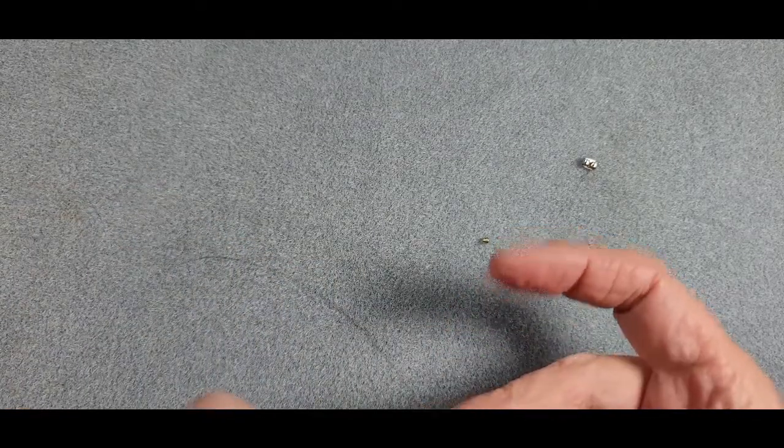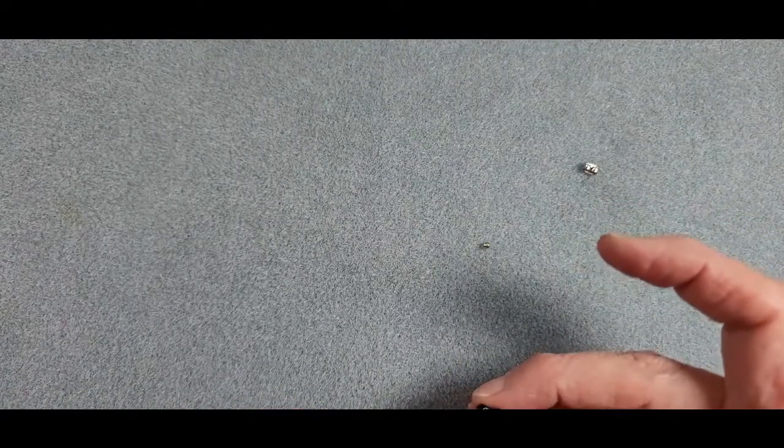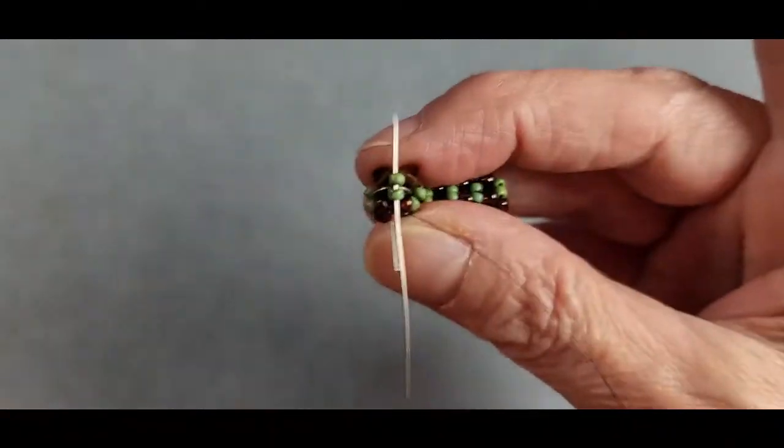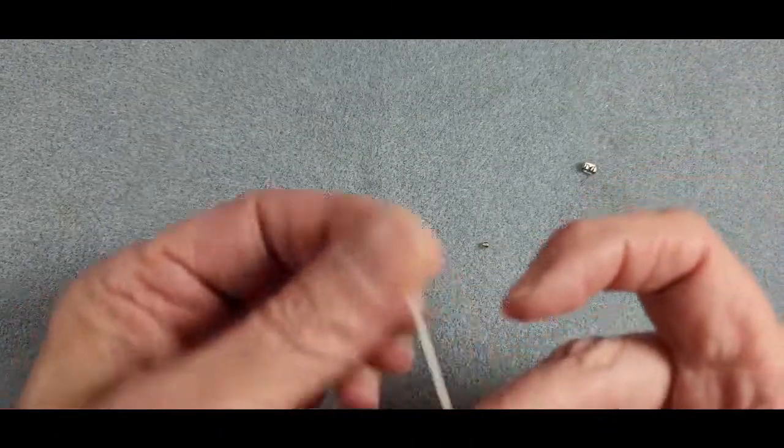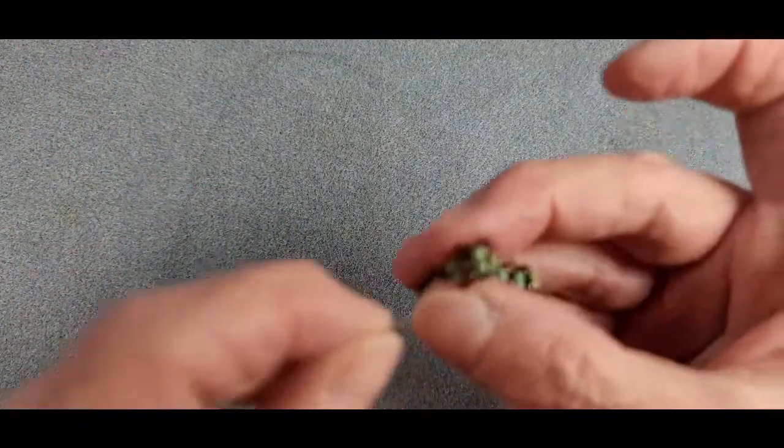So here I am coming around to this 8-0 right here, the top of my little post. Now I'm going to sew up through the two 11-0s right beside it. And this is where you need to make sure your thread doesn't get hung up on your earring post.